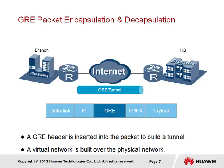The new IP header supports transport of the GRE payload between the endpoints of the GRE tunnel. The source IP address of the new IP header is the IP address of the local tunnel interface, and the destination IP address is the remote address of the tunnel interface. The link layer may represent variant link layer protocols such as Ethernet and Frame Relay.